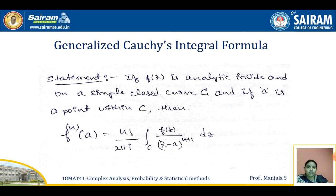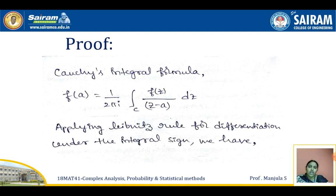Now, with the help of Cauchy's integral formula, we can also derive the generalized Cauchy's integral formula. The statement is: if f of z is analytic inside and on a simple closed curve C, and a is a point within C, then the nth derivative is given by fn of a equals n factorial by 2 pi i, integration over C of f of z divided by z minus a to the power n plus 1, with respect to z. Now we have to prove this.